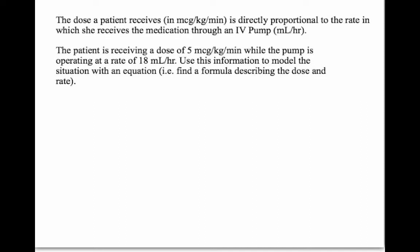Before we get into a titration example, I want to briefly do a review of variation, specifically direct variation. This is something we're going to need in future problems when we are creating models to describe a dose and a rate. The dose a patient receives, in micrograms per kilogram per minute, is directly proportional to the rate at which the patient receives the medication in an IV pump.